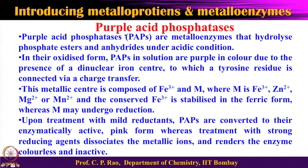These are reasonably well understood enzymes called purple acid phosphatases. The term 'purple' comes from the color, and 'acid' comes from the pH — these operate under acidic conditions. They are metal enzymes involved in hydrolyzing phosphate esters under acidic conditions. In their oxidized form they are purple in color, and the origin of the color is a charge transfer from tyrosine to the oxidized iron center.